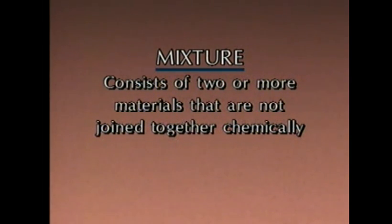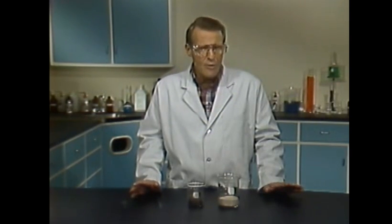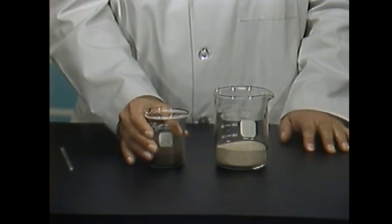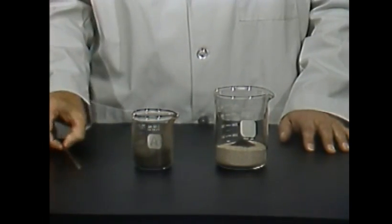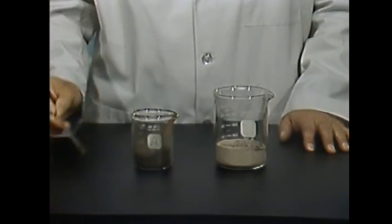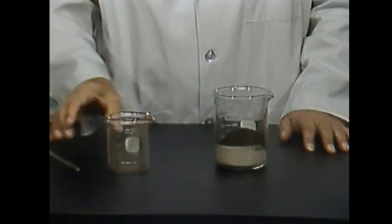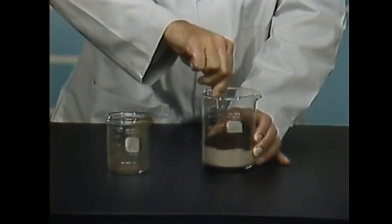A mixture consists of two or more materials that are not joined together chemically. Unlike a compound, which consists of two or more elements that have combined or bonded chemically, when a mixture is formed, the properties of the materials that produce the mixture do not change. Another difference between mixtures and compounds is that the proportions of the materials in a mixture can vary. I'm going to make a mixture of sand and iron filings — I simply put the sand and the filings together and stir. I can add more filings or more sand to this mixture and it's still a mixture.